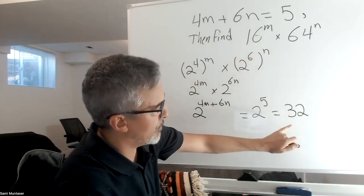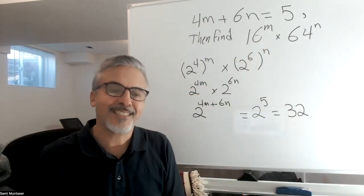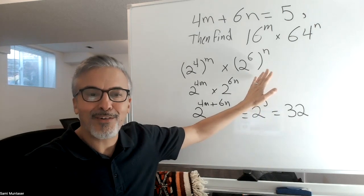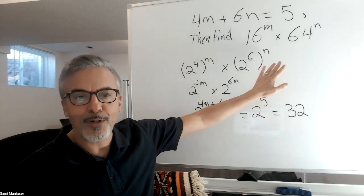2 to the 5 equals 32. And that's as easy as it is. Very good question. I hope you enjoyed it.